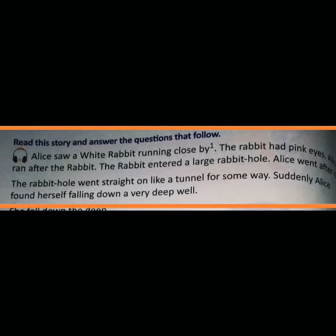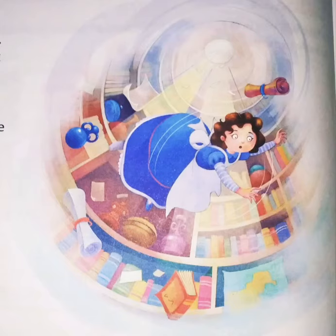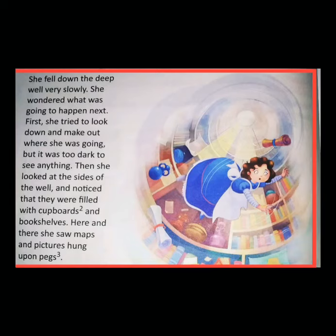The rabbit hole went straight on like a tunnel for some way. Suddenly, Alice found herself falling down a very deep well. Alice also went straight into this rabbit hole like a tunnel — tunnel means underground. She found that she was falling down into a deep well. She fell down very slowly. Then she looked at the sides of the well and noticed that they were filled with cupboards and bookshelves. Here and there, she saw maps and pictures hung up on pegs.